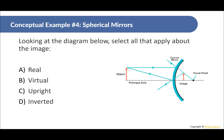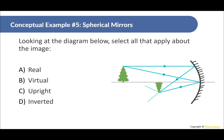Example 1: Look at the diagram. The object is here and the image is smaller, upright, and behind the mirror. That means it is virtual and upright. Example 2: This is a concave mirror. The image is on the same side as the object, so it is real, and since it's upside down, it is inverted.